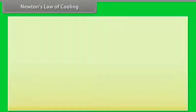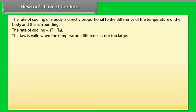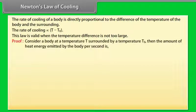Newton's Law of Cooling states that the rate of cooling of a body is directly proportional to the difference in temperature between the body and its surroundings: rate of cooling ∝ (T − T₀). This law is valid when the temperature difference is not too large. Consider a body at temperature T surrounded by surroundings at temperature T₀. The amount of heat energy emitted by the body per second is given by a formula.